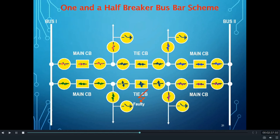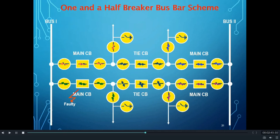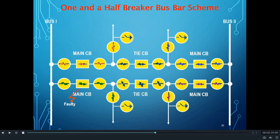Similarly, when there is a fault in a main CB, the main CB trips, but none of the feeders will be affected. The feeder gets disconnected from one bus on one side, but from the other side it remains connected through the tie CB. Hence, because of any circuit breaker fault, the system will not be affected.